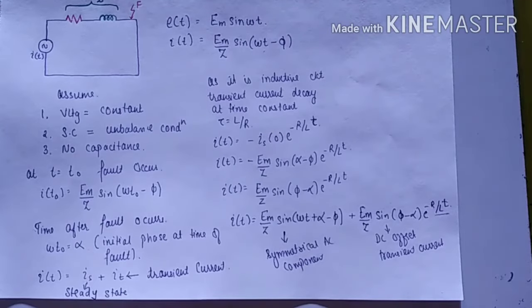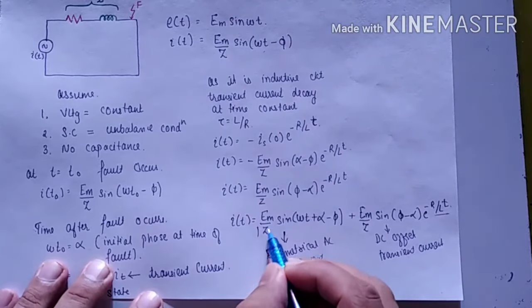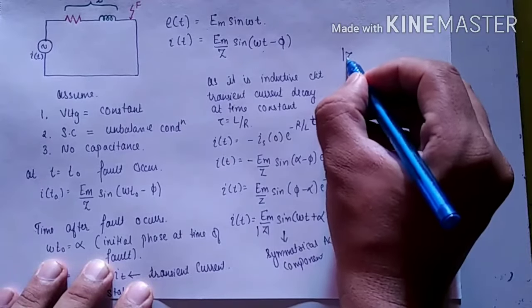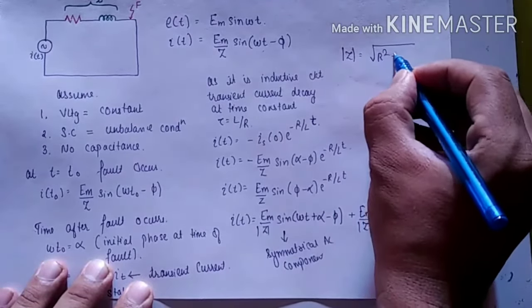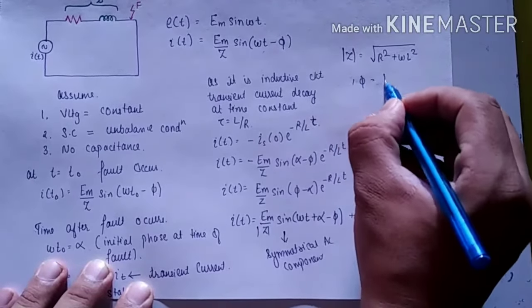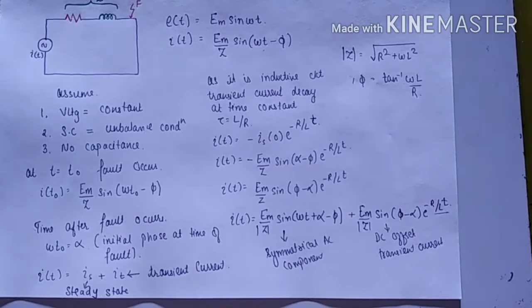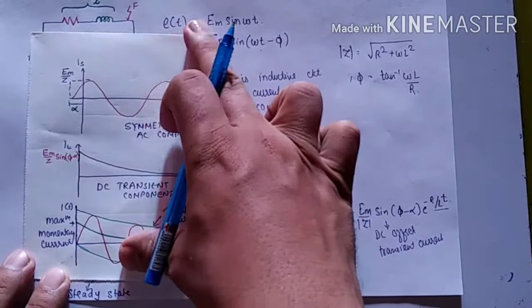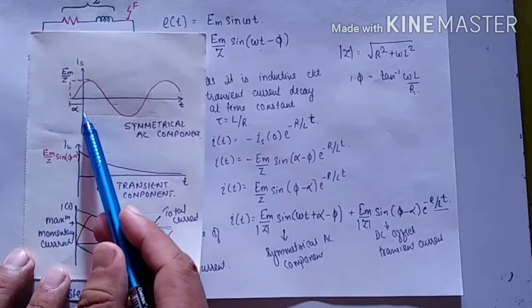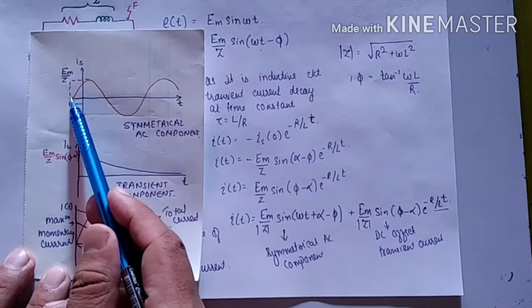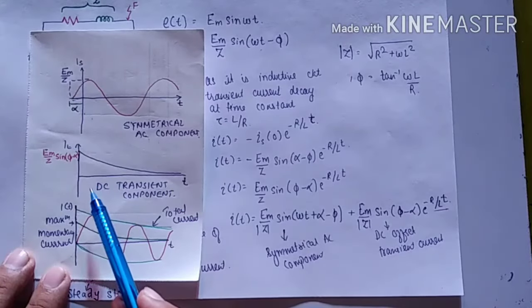The total current is Is + It. We also know that Z = √(R² + ωL²) and φ = tan⁻¹(ωL/R). The graphical expression shows the symmetrical AC component, with α indicating the angle at which the fault occurs.